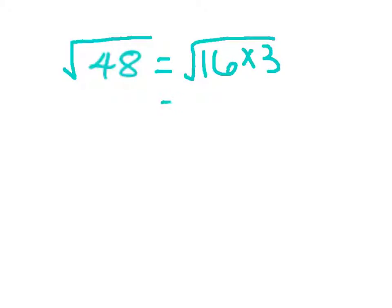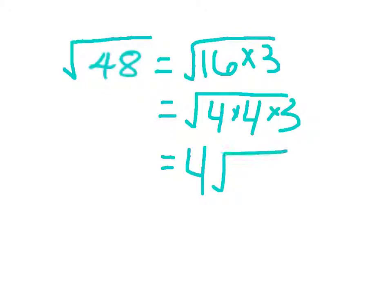And I bet all of you know that 16 is a perfect square. It's 4 times 4 times 3, which means we have a 4 here and a 3 here.